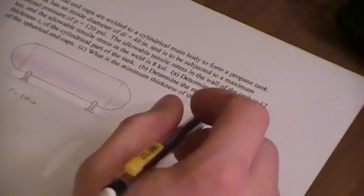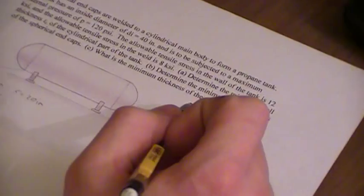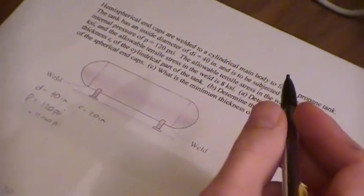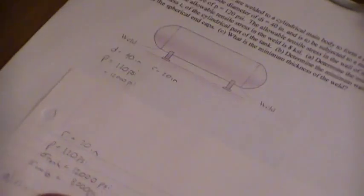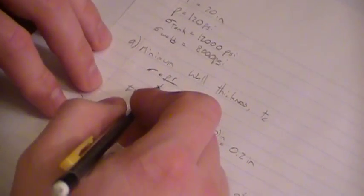The first part of the problem was to determine the minimum wall thickness of the cylindrical part of the tank. I did that down here, and the formula was for the stress equals PR over T. Obviously you just rearrange the formula to give you the T, which is what you want.